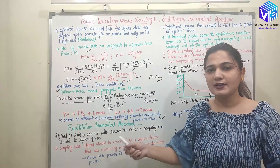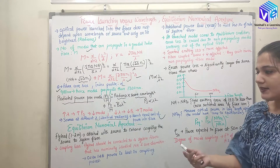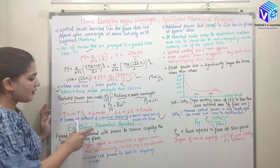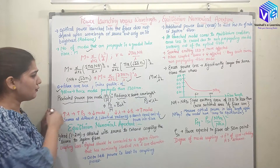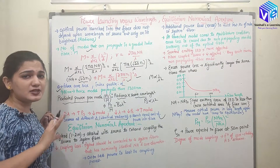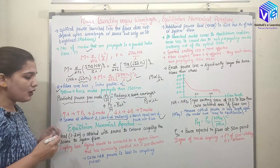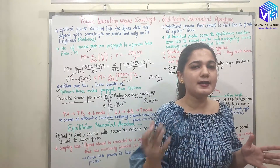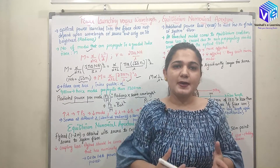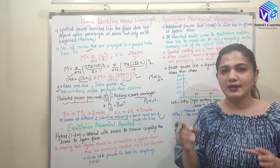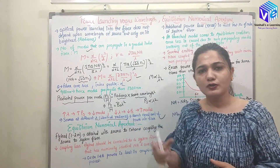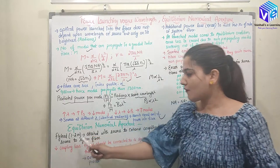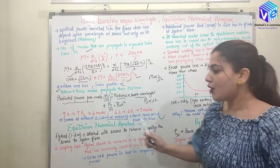Now coming to the equilibrium numerical aperture. The numerical aperture is given by NA = √(2Δ × N1). The properties of the light change as it experiences losses when launched inside the fiber. The fly lead or pigtail — a small one to two meter long optical fiber directly attached to the source — is used to minimize launching losses and enhance coupling from the source to the system fiber.